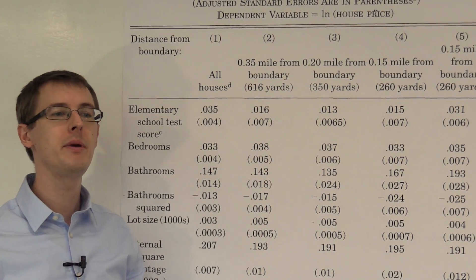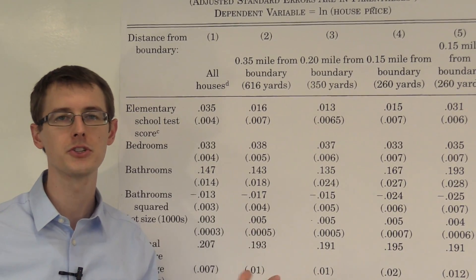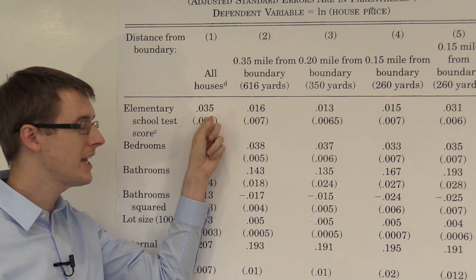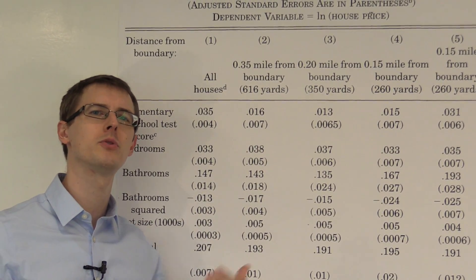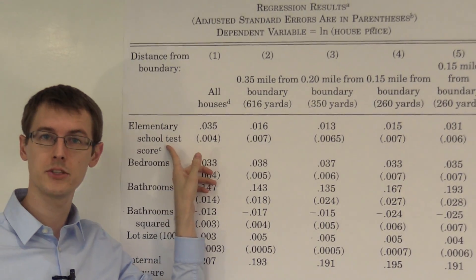Things like maybe good schools are also close to golf courses or parks or movie theaters or things that people also want to live close to. And so what this is picking up is actually the causal effect of those confounders on house prices, not the effect of elementary school test scores.